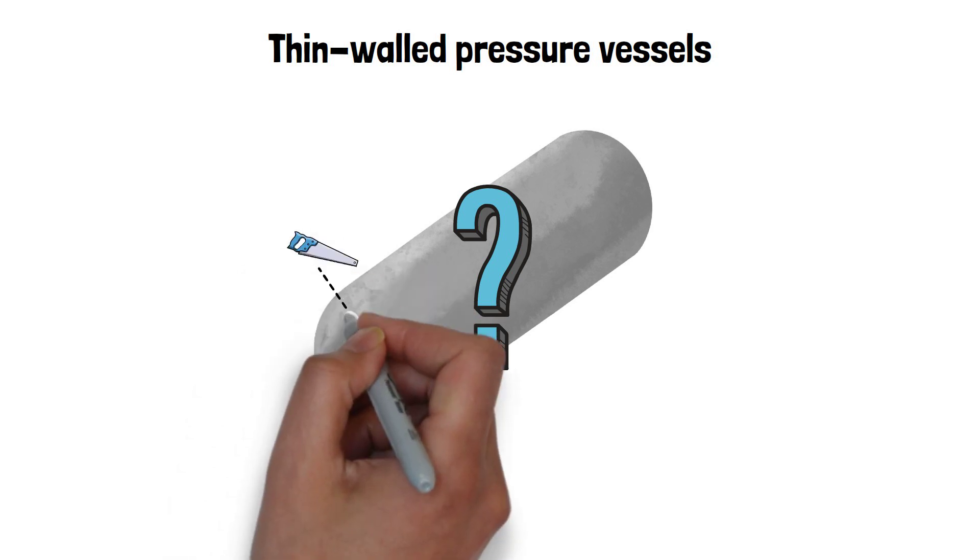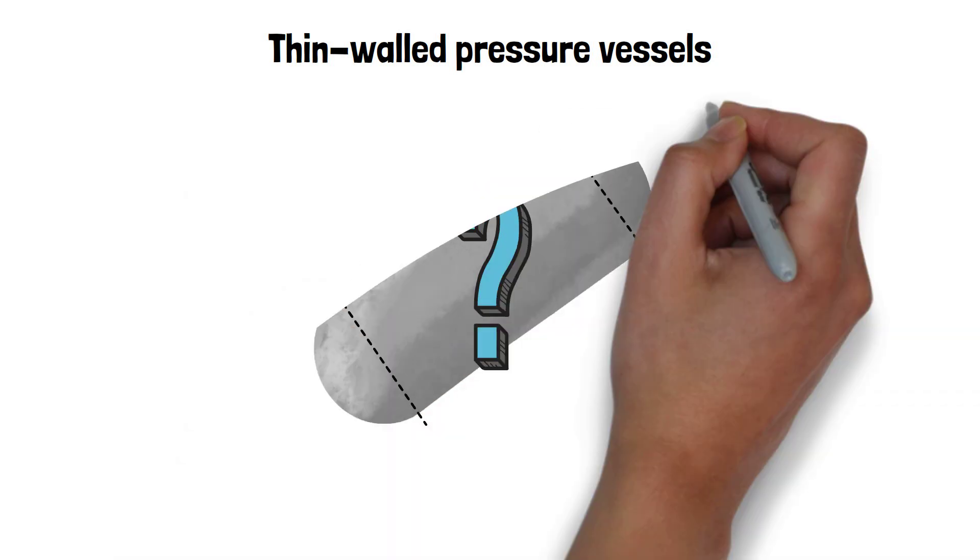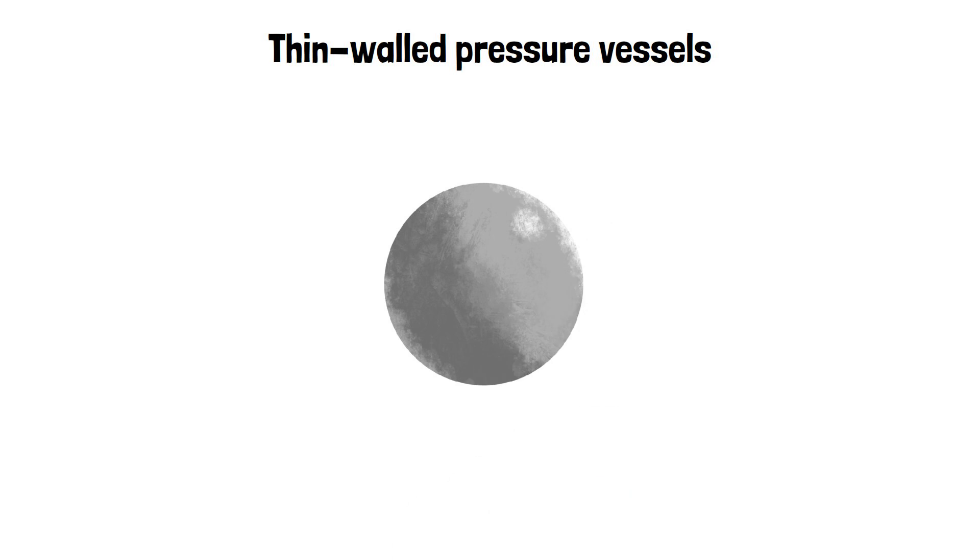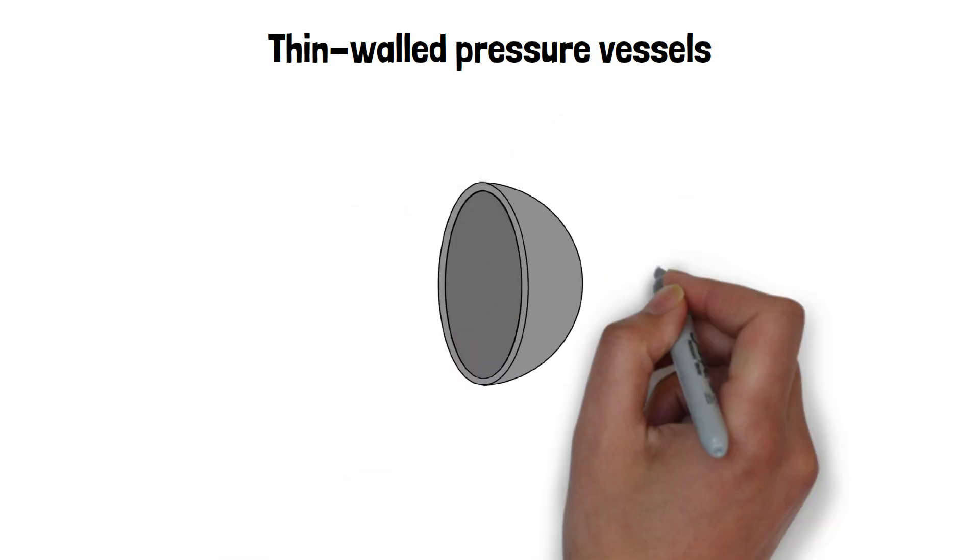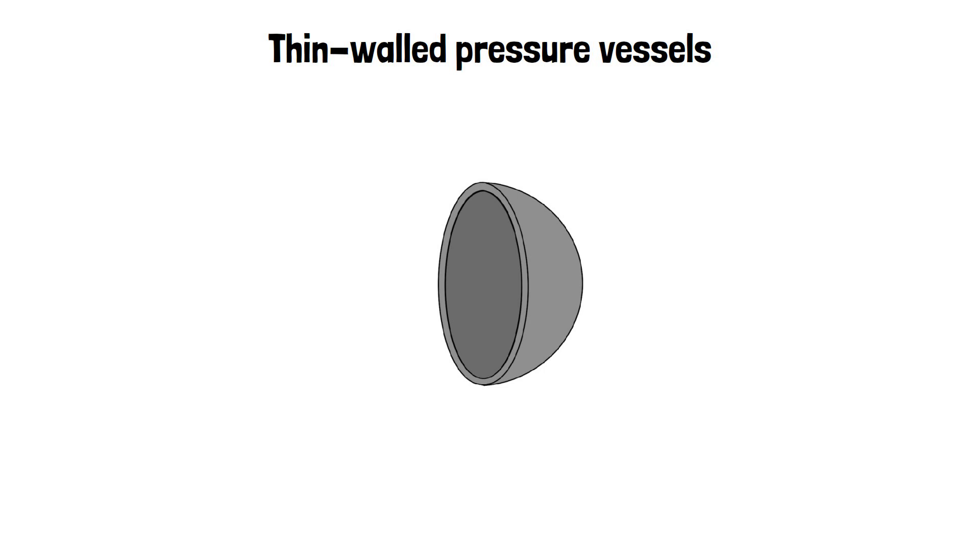To make it easier, we can remove the cylinder and analyse this component as a sphere. If we make a cut along its diameter, effectively cutting the sphere in half, we see that it is a similar setup for calculating the longitudinal stress.